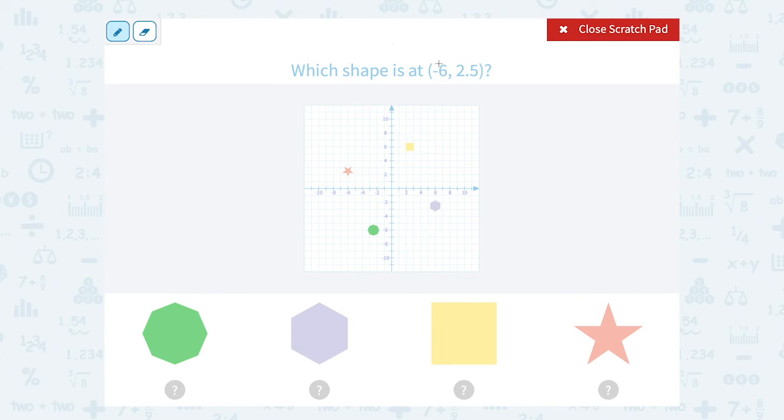Which shape is at negative 6, 2.5? Okay, well negative 6, 2.5 is telling us to go 6 to the left and then 2.5 up. So 2 up, and then 0.5 is going to be another halfway between. So I'm going 6 to the left and then up halfway between 2 and 3. So we're going to land on our star.